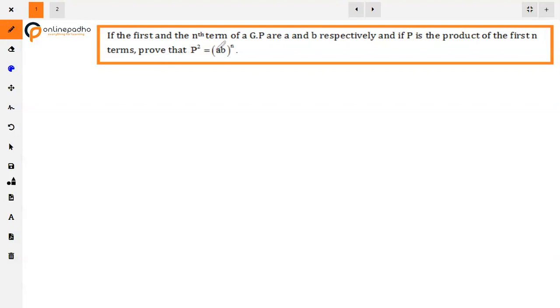The question is: if the first and the nth term of a GP are A and B respectively, and if P is the product of the first n terms, then prove that P square is equals to AB raised to power n.